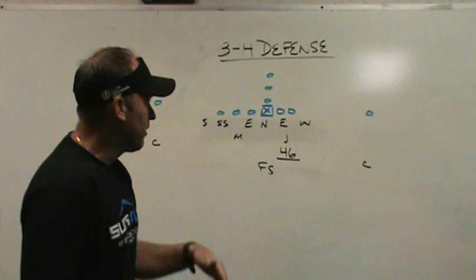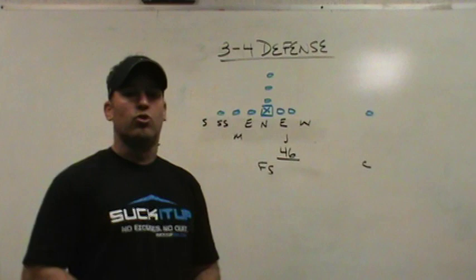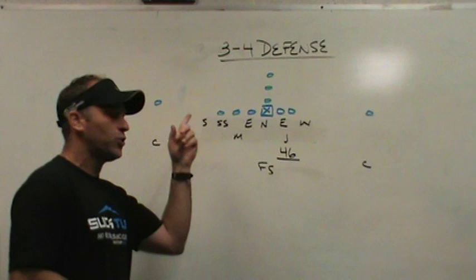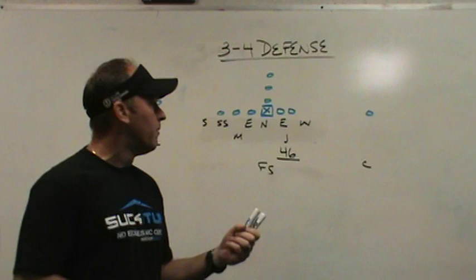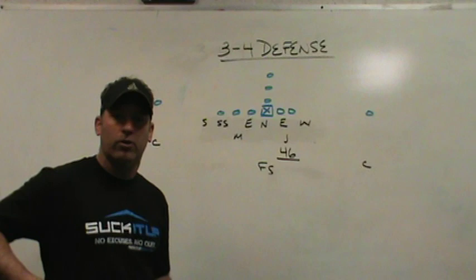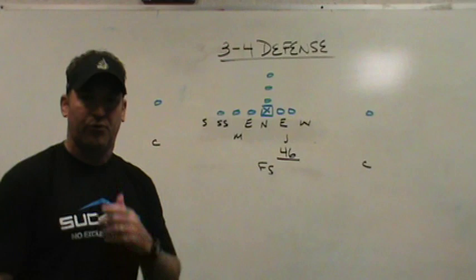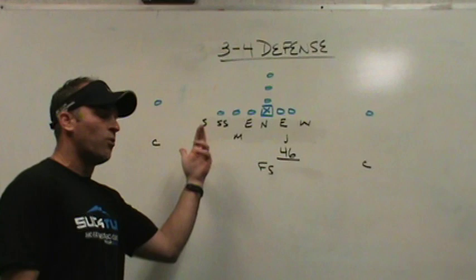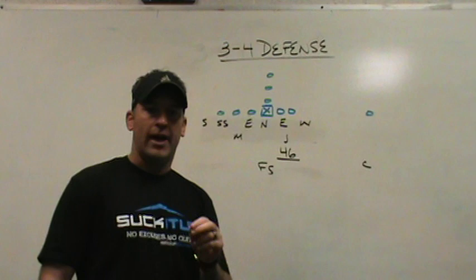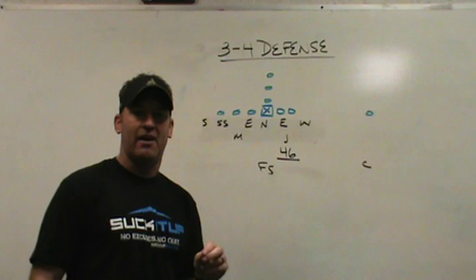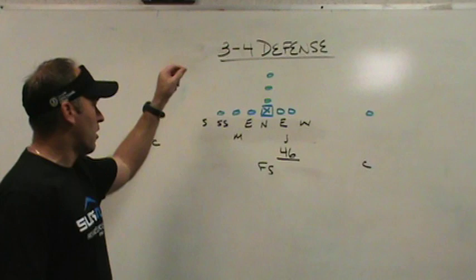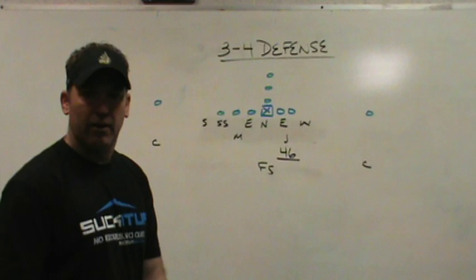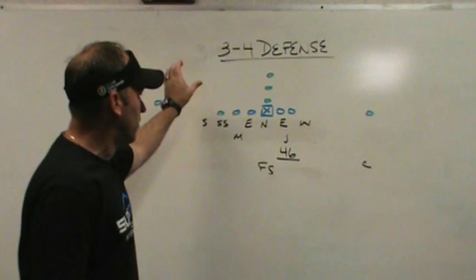A 3-4 team can play the 46 front, the over front, the oaky front, and the under front — fronts are universal to the game of football. Any team can play any front at any time. It's just a matter of what personnel they have. So when you're looking at defensive football, don't look at the picture and say 'that's a 6-2 defense' — that might be a 3-4 defense in a 46 front. You have to be able to delineate between fronts and actual defensive structures.